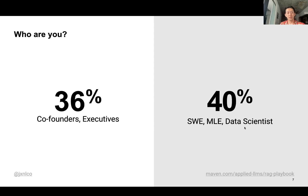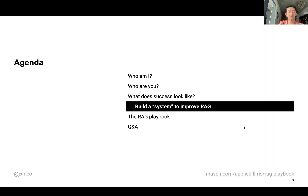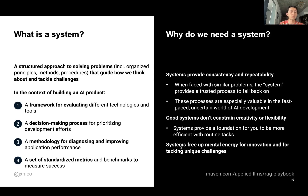In terms of signups and accepted participants, it's a mix of about 36% co-founders and executives, and about 40% software engineers, machine learning engineers, and data scientists. What does success look like? Success looks like building a system to improve RAG. Why do we need a system? A system is a structured approach to problem solving that can guide how we think about problems.